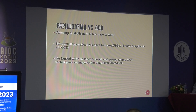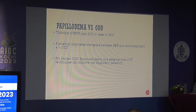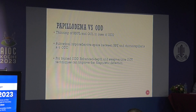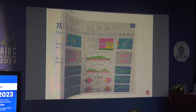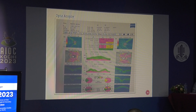Papilledema versus optic disc head drusen: in drusen, you usually see thinning of RNFL and GCL, whereas in papilledema there is increased thickness. The second important differentiator is a sub-retinal hypo-reflective space between the RPE and choriocapillaris, which suggests optic disc drusen. For buried drusen, swept-source and enhanced-depth OCT can improve diagnostic detection.